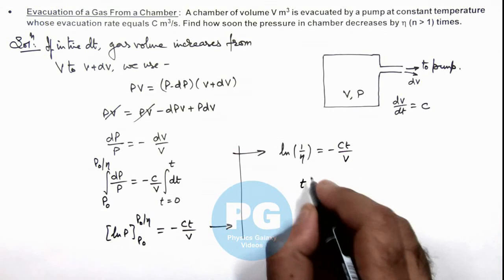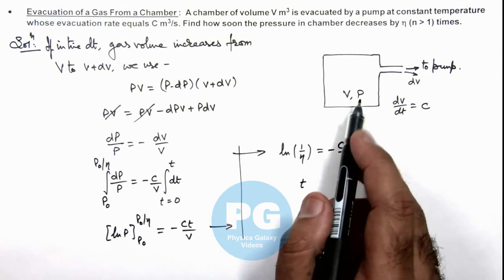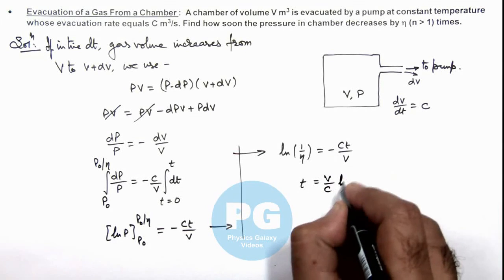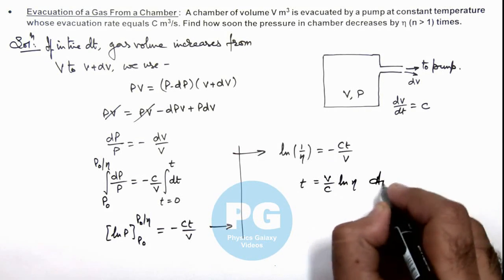So the value of time in which the pressure decreases by η times can be given as (V/C)ln(η). That is the result of this problem.